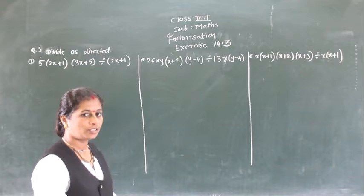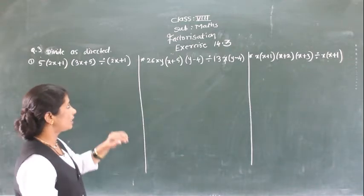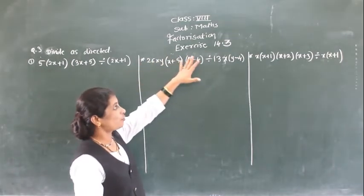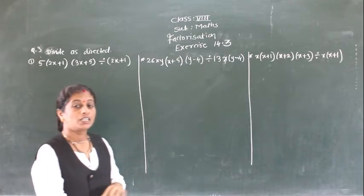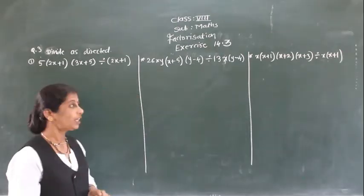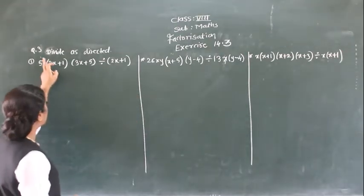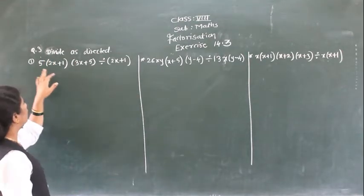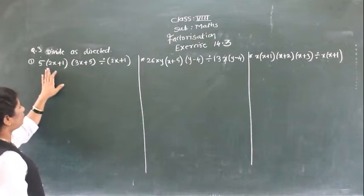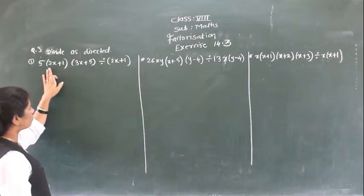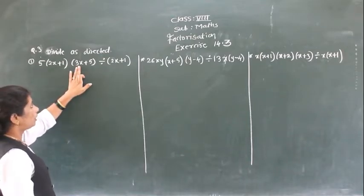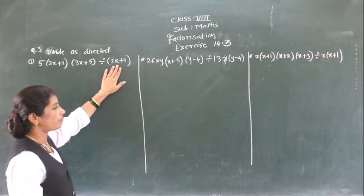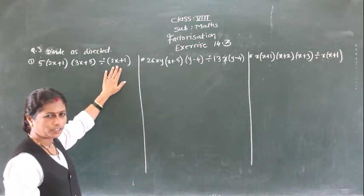Hello students. Now in this period we will see the exercise of computing point 3, we will see the solution. So first here, divide as high of 1. So: 5 × (x+1)(3x+5) divided by (2x+1).